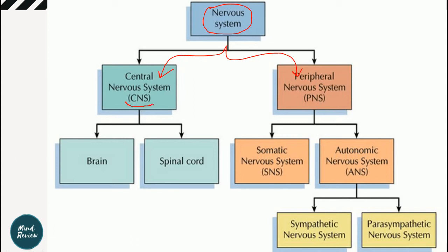CNS is short for central nervous system and PNS is short for peripheral nervous system. Our brain and spinal cord are included in the central nervous system. The peripheral nervous system is further of two types: somatic and autonomic nervous system. The autonomic nervous system is in turn of two types: sympathetic and parasympathetic nervous system.